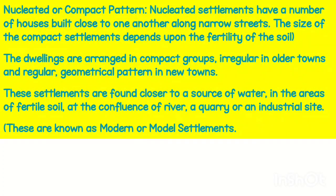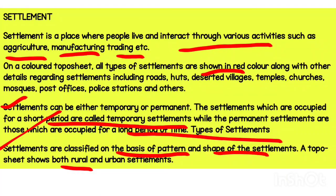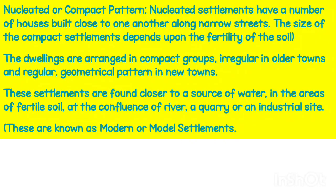On the basis of pattern and shape, settlement is divided into three parts: one is nucleated or compact settlement, the second is dispersed settlement, and the third is linear settlement.